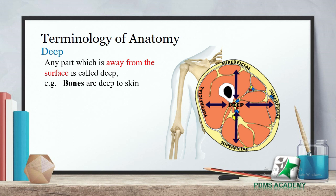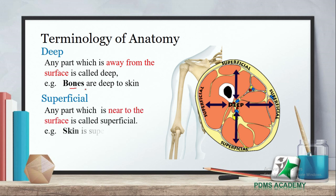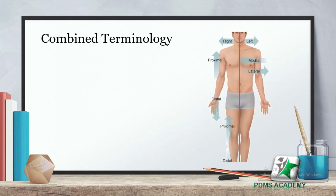Deep: any part which is away from the surface is called deep — for example, bones are deep to skin. Superficial: any part which is near to the surface is called superficial — for example, skin is superficial to bones. Body کا part جو surface سے ہٹکے ہوتا ہے جیسے veins اور bones، وہ deep کہلاتا ہے، اور جو surface پر ہو جیسے skin وہ superficial کہلاتا ہے۔ اس کے بعد ہمارے پاس آتی ہے combined terminology۔